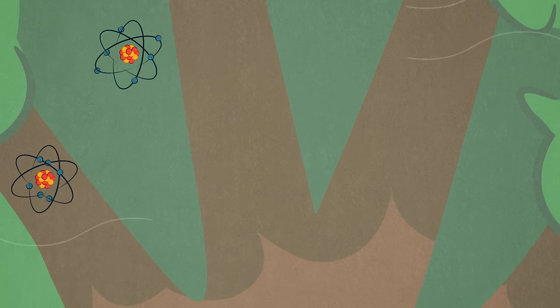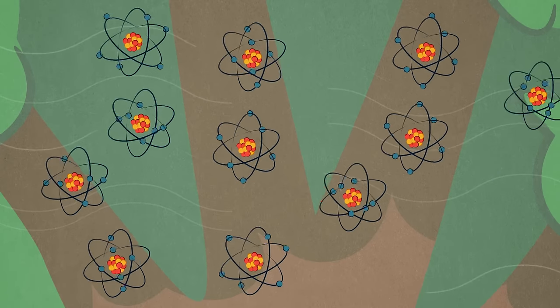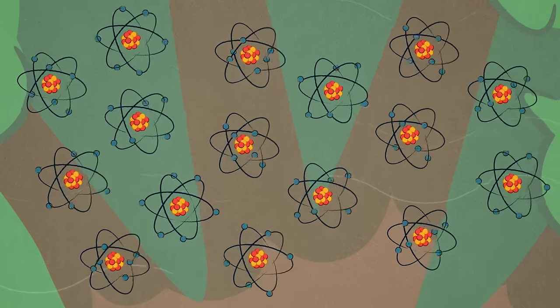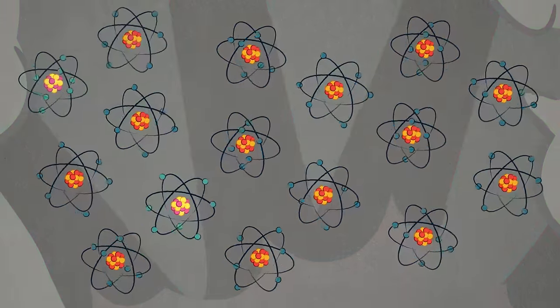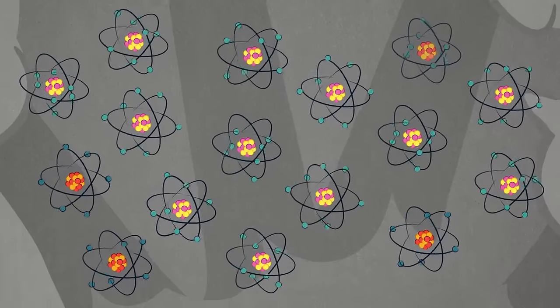Carbon 14 exists in the atmosphere, and anything that breathes absorbs it. So as long as something is living, it is taking in and replenishing its supply of carbon 14. When it dies, the carbon 14 that is left begins to decay back into nitrogen 14.